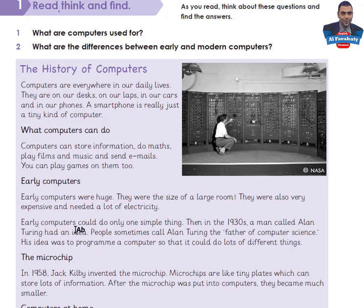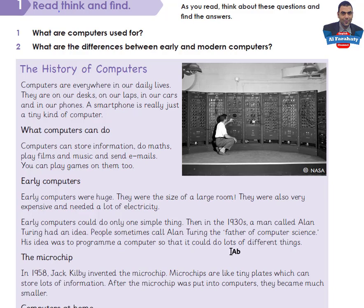Early computers could do only one simple thing. Then in the 1930s, a man called Alan Turing had an idea. People sometimes called Alan Turing the father of computer science. His idea was to program a computer so that it could do lots of different things — the microchip.